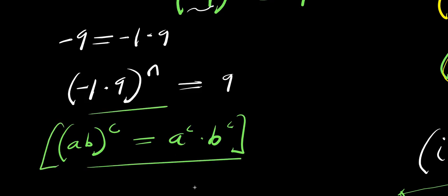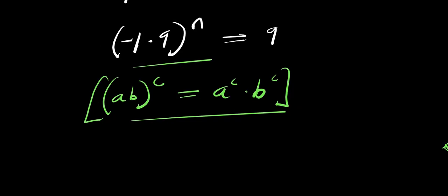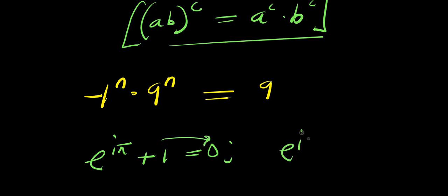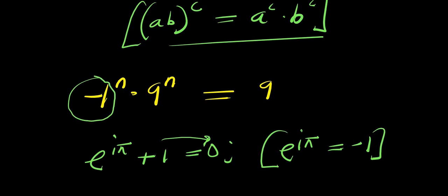We apply this right here. We are simply going to have negative 1 to the power n times 9 to the power n equals 9. Now let's consider this identity: if you have e to the power i times pi plus 1 equals 0 — meaning that e to the power i times pi equals negative 1. So negative 1 here equals e to the power i times pi.